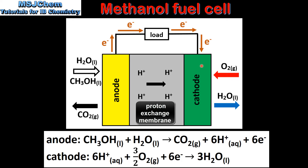The hydrogen ions pass from the anode to the cathode in the proton exchange membrane. At the cathode we have the reduction of oxygen to produce water, as we can see in this equation here.